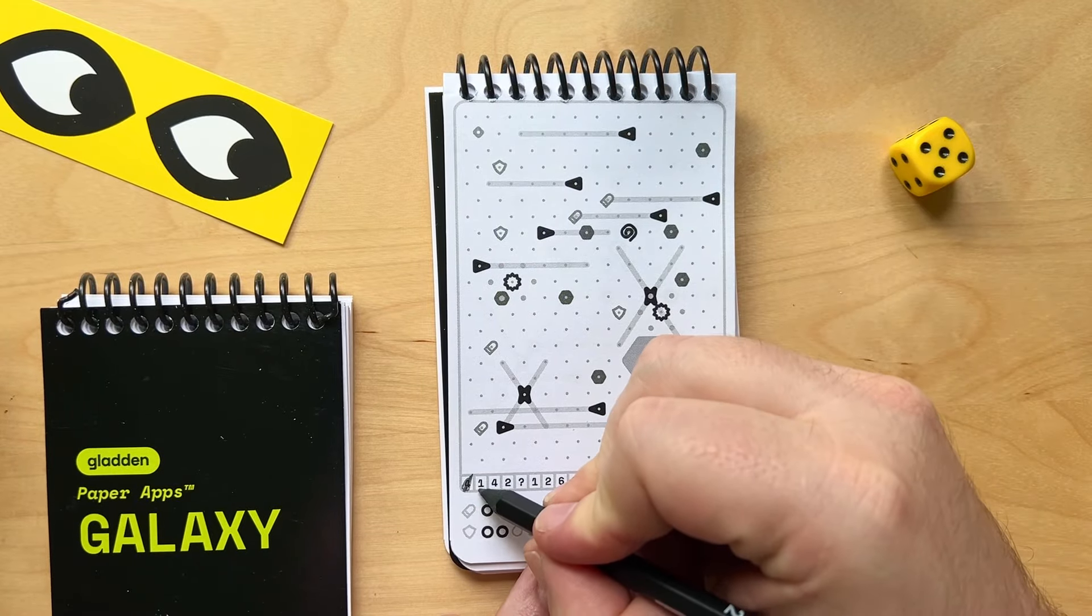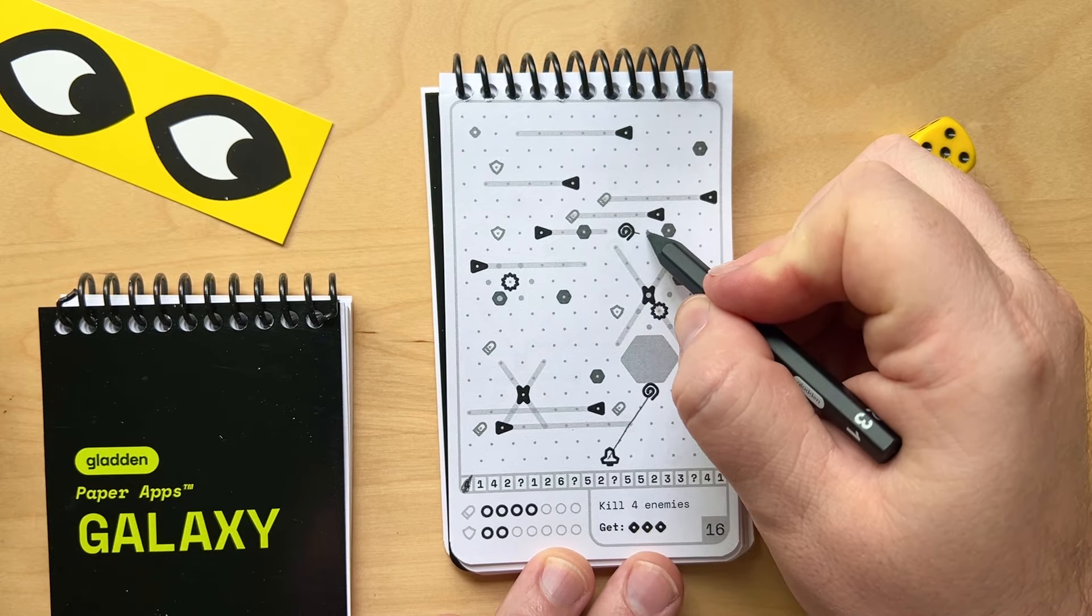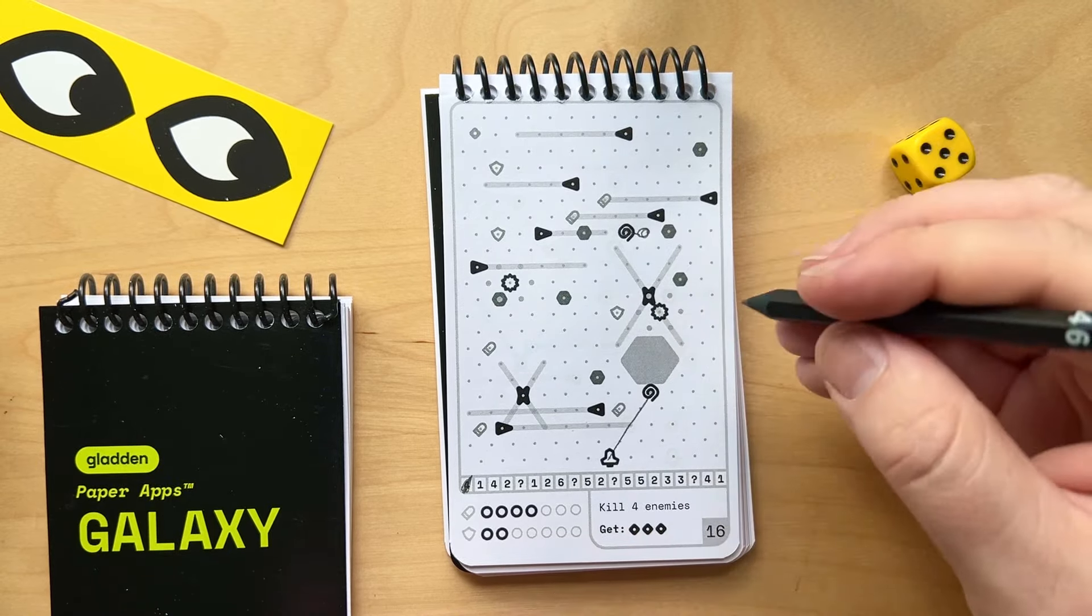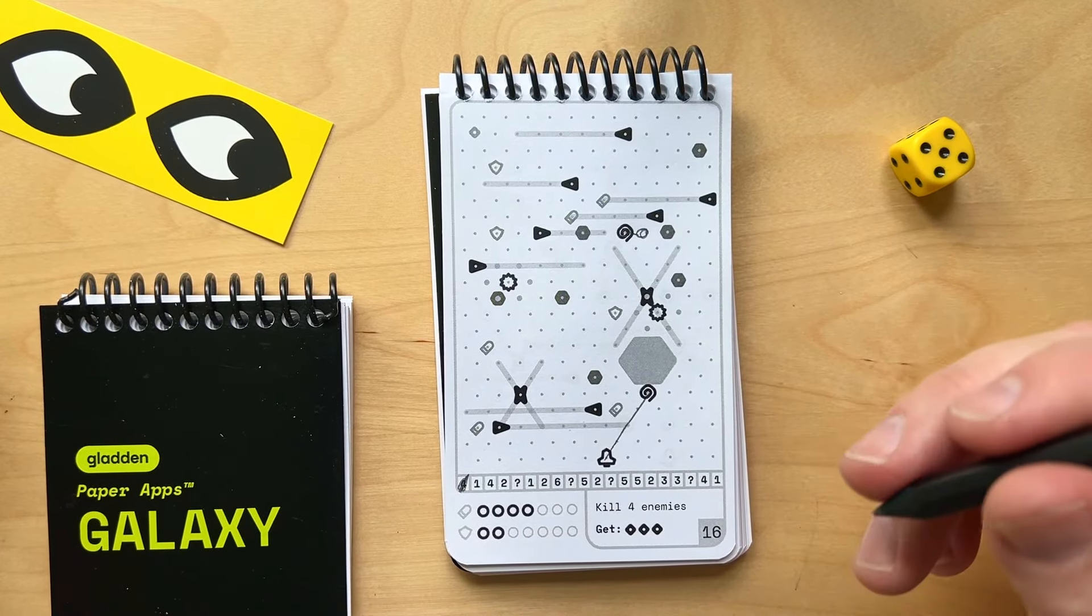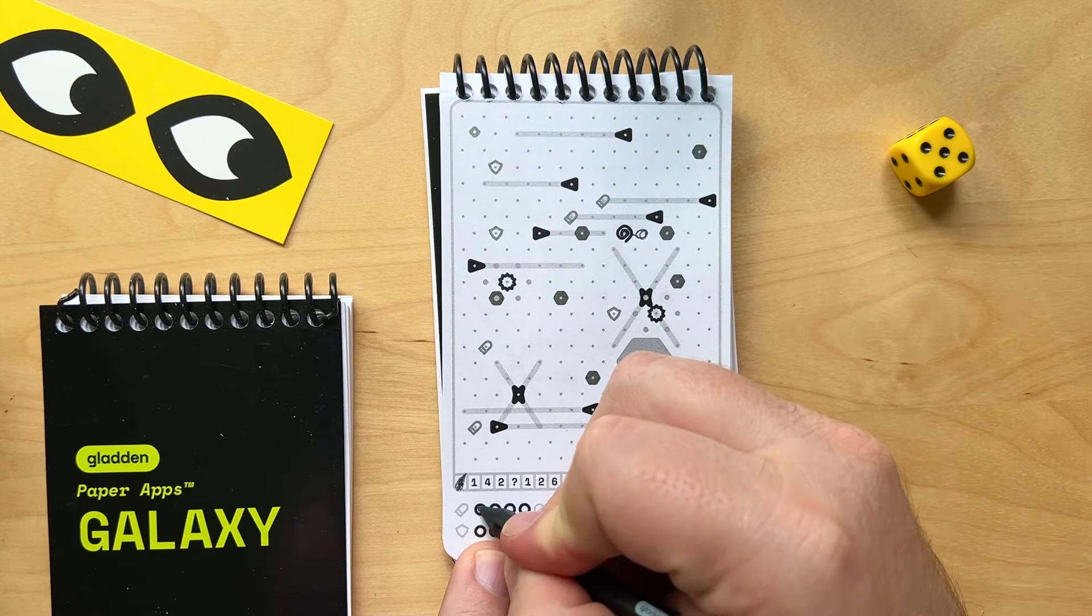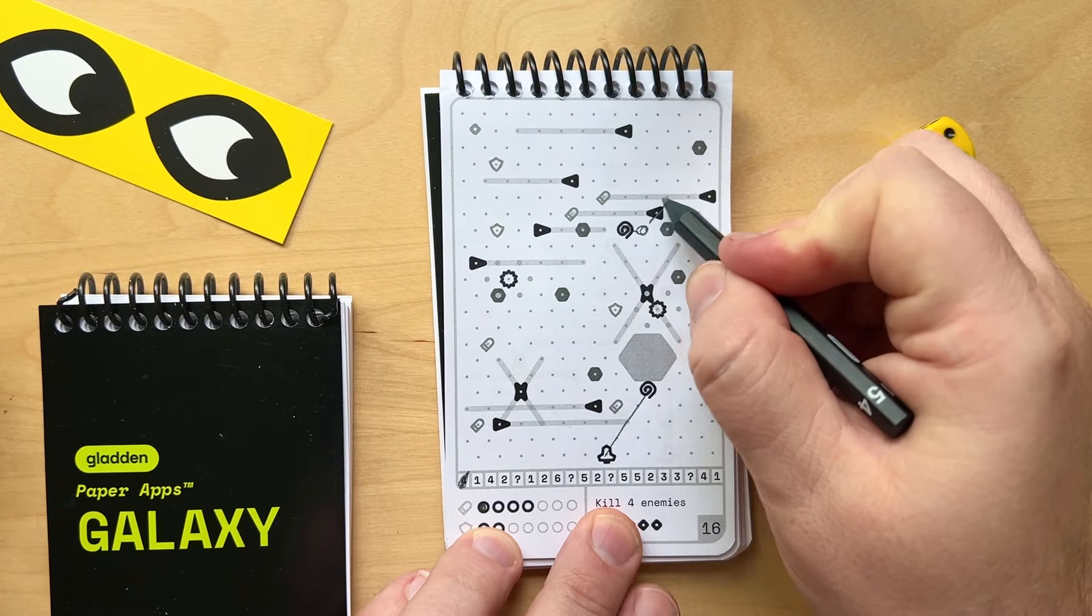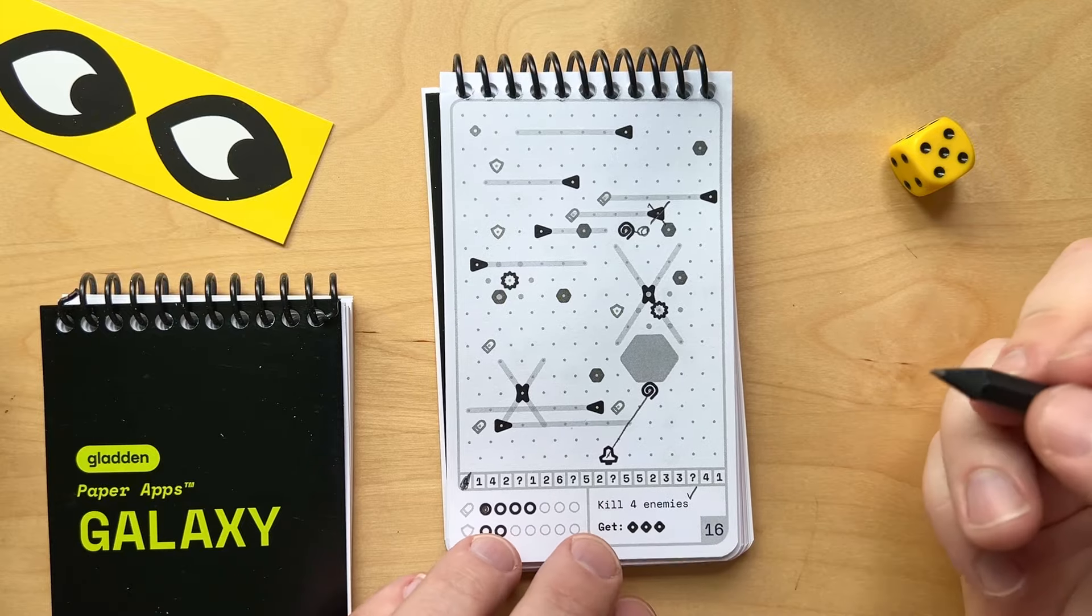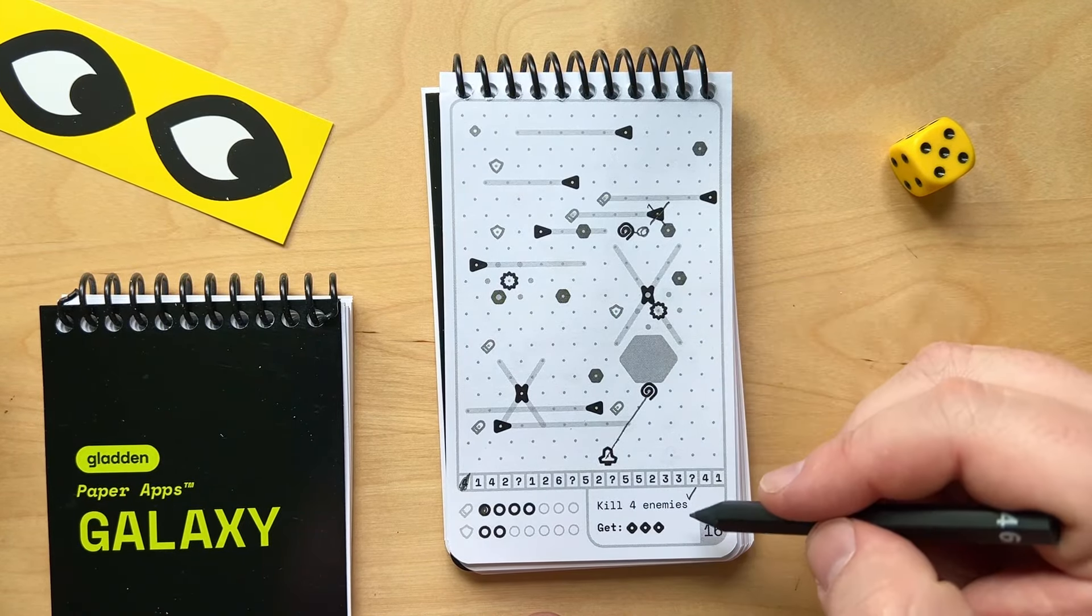My next value is one. So I see that if I move one to the right, that puts me right next to this ship. So since I'm one away, I would need to roll a one or higher to hit it. But because no matter what, I'll roll a one, it's an automatic hit. So I'll cross out one of my missiles here, and I'll put a big X on that. And I even like to put a checkmark here so I can keep track of how many enemies I've gotten. So one down.